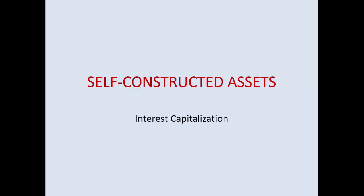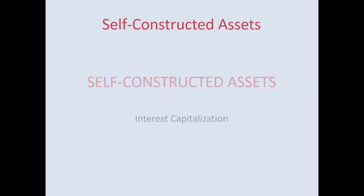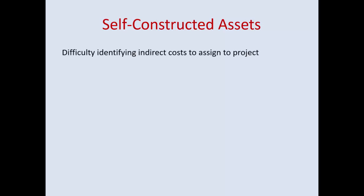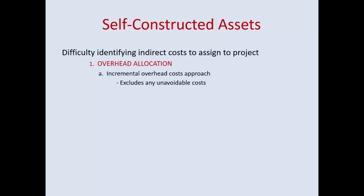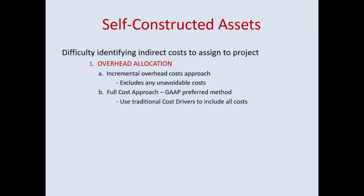Part of the interest incurred for building your own assets — self-constructed assets — can be capitalized, but there are strict rules around this, because there's difficulty identifying indirect costs to assign to a project. You will have overhead allocation. The incremental overhead cost approach excludes unavoidable costs, and the full cost approach is the GAAP-preferred method, using traditional cost drivers to include all costs. In this course, we focus on the financial side: interest capitalization.